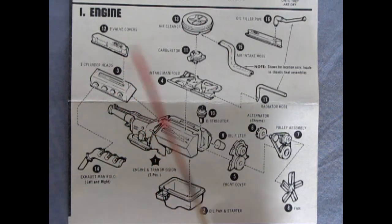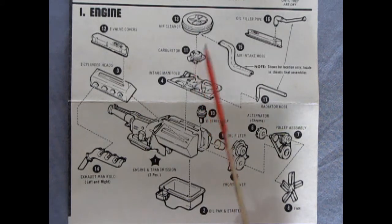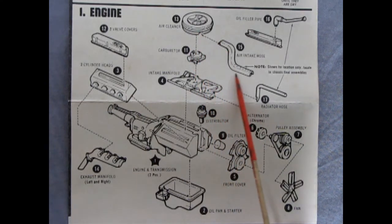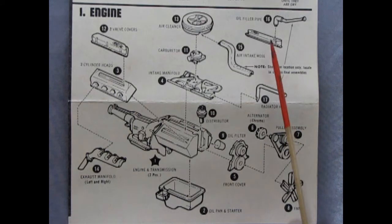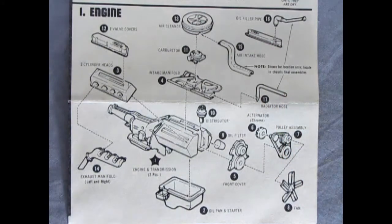There's our cylinder heads, our valve covers, our intake manifold, carburetor, air cleaner with the air cleaner intake separate as well as this oil filter pipe up here. They're just showing the extra valve cover on this side and then we've got an upper radiator hose.